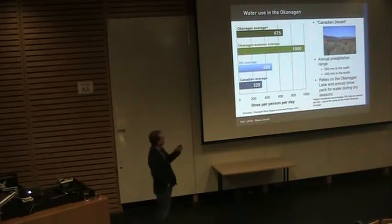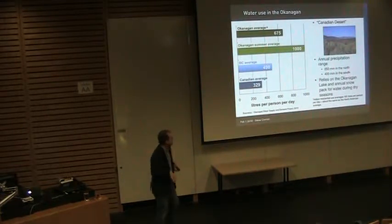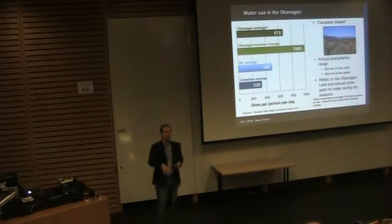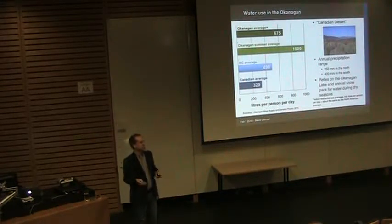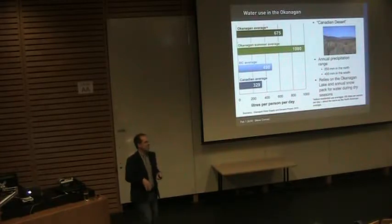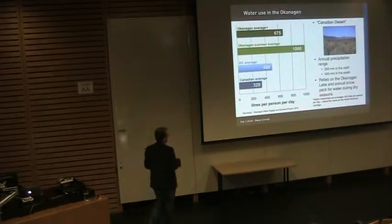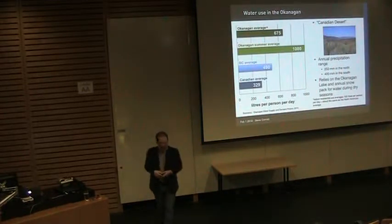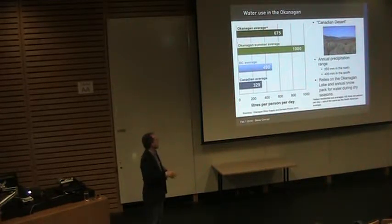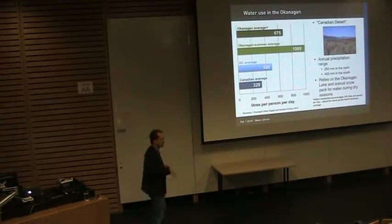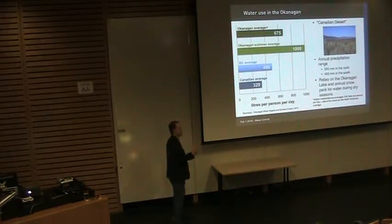In the north of the Okanagan, it rains only about 250 millimeters a year — about 10 inches — compared to Vancouver, which receives about 1,700 to 2,000 millimeters a year. This means that the Okanagan relies primarily upon winter snowfall and the snowpack that accumulates during winter.